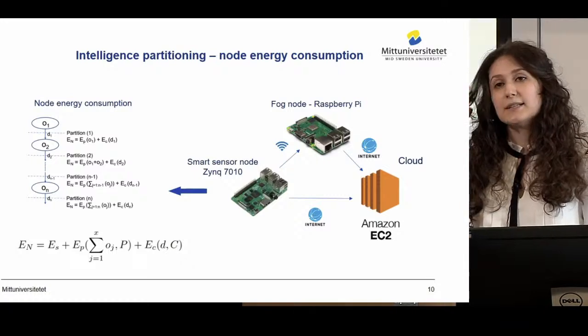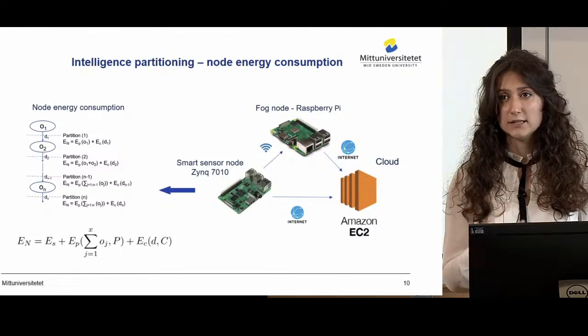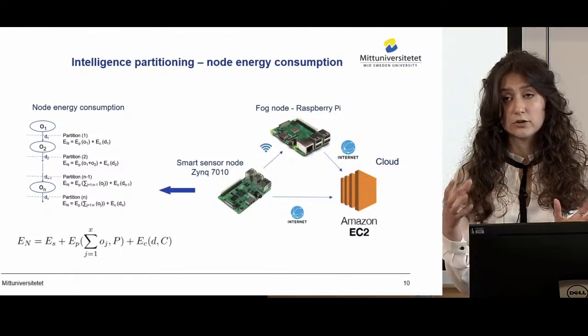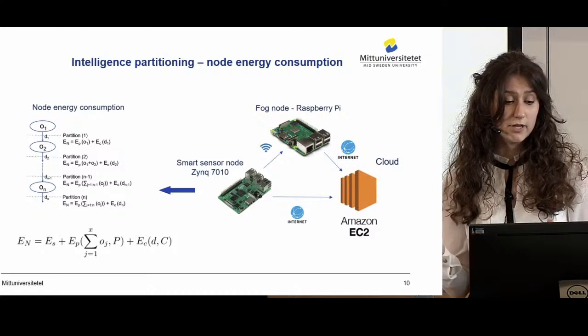In this slide, we can see a schematic representation of the node-fog-cloud environment, where the smart sensor node is represented by the Zynq 7010 FPGA board, the fog node is represented by the Raspberry Pi 3B+, and the cloud is represented by the Amazon EC2 instance. We consider only forward communication from the smart sensor node towards the fog and cloud. The fog node is allocated in the gateway, so node-to-fog communication is wireless while communication towards the cloud is internet-based.